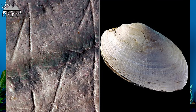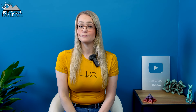Several human species seem to have evolved from Homo erectus, including Homo antecessor, which emerged around 1.2 million years ago and disappeared around 800,000 years ago. Homo heidelbergensis also descended from Homo erectus, emerging approximately 700,000 years ago and disappearing around 200,000 years ago. It is also highly likely that Homo floresiensis — the 'hobbit' species in Indonesia — is a descendant of Homo erectus. I've made dedicated videos on all three of these species.